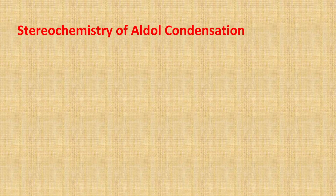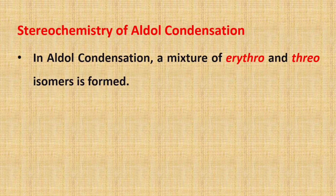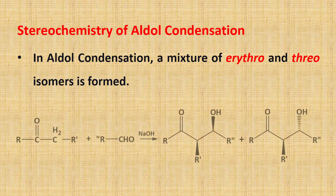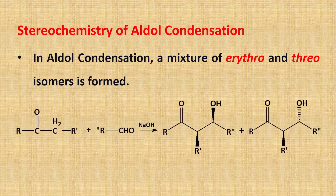Next is the stereochemistry of aldol condensation. It is generally observed that in aldol condensation, a mixture of erythro and threo isomers are formed. Consider this example of cross-aldol condensation, where a ketone and an aldehyde group condense to produce two isomers. Look at the orientation of the hydroxy group in each isomer. In the erythro isomer, the hydroxy group is located in front of the plane, while in the threo isomer, the hydroxy group is behind the plane.